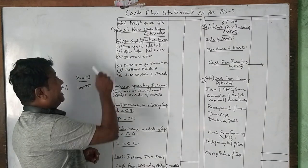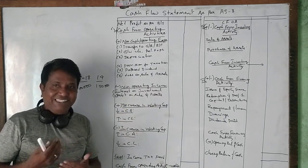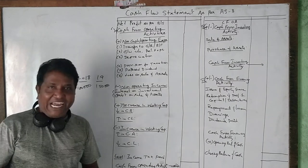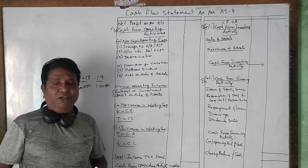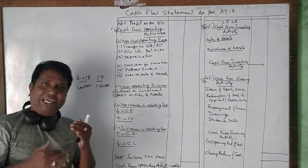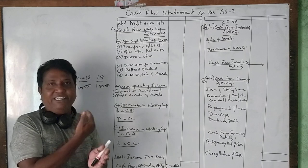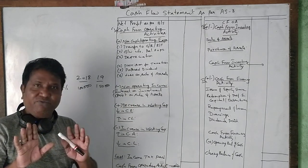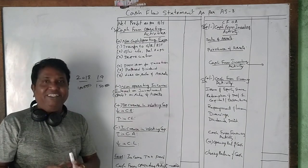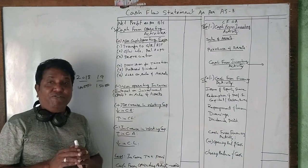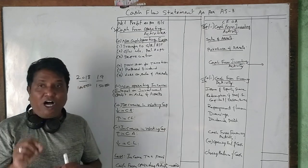Under the cash from operating activity heading, the income earned by operating the business is already captured in the profit and loss account. When we prepare the P&L account, all incomes are credited and all expenses debited. However, there are certain expenses which are non-cash in nature and certain non-operating expenses that also need adjustment.